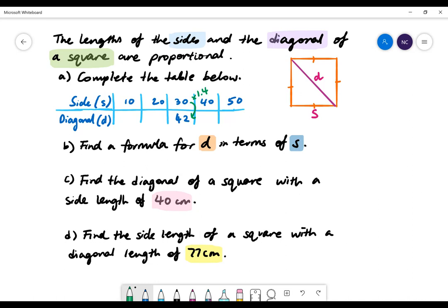The key is the sides and the diagonals are directly proportional, so we can use this multiplier to find the missing values of the table. The side length of 10 multiplied by 1.4 will give us the diagonal length of 14. The side length 20 multiplied by 1.4 will give us 28 as the diagonal length. And in a similar fashion, 40 will give us 58.8 and 50 will give us 70.